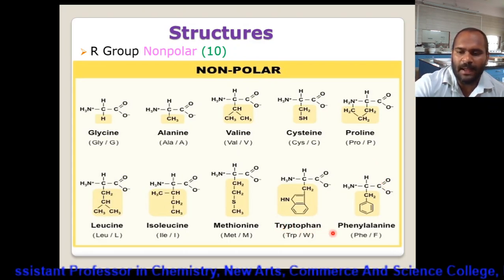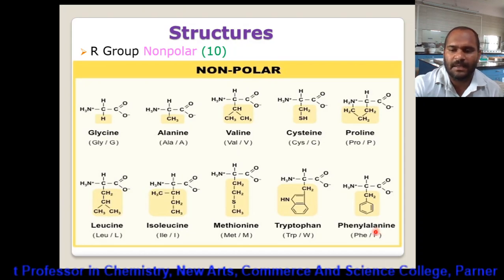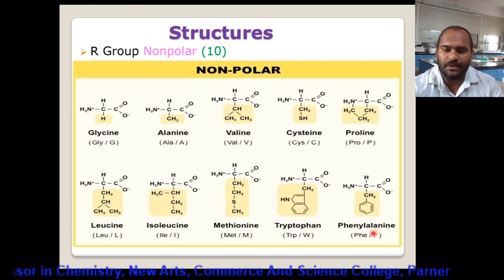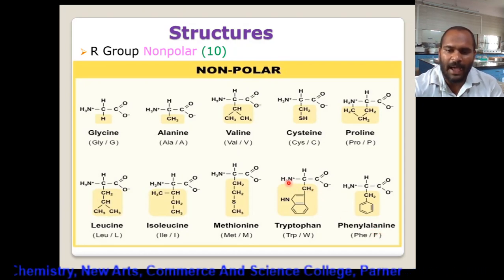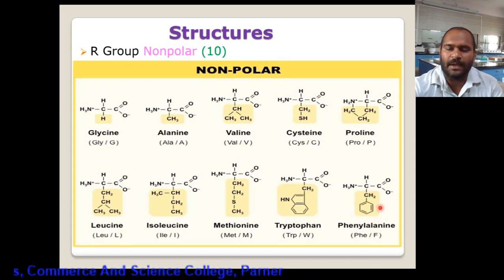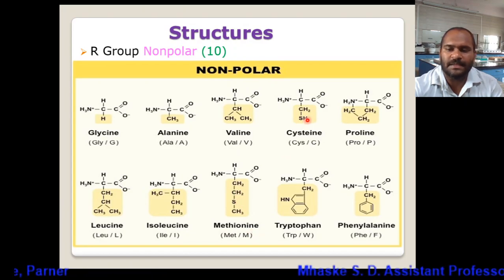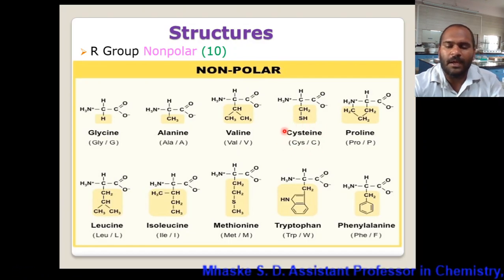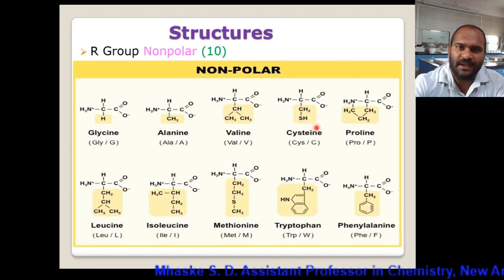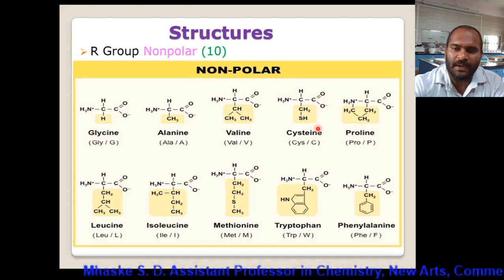Tryptophan and phenylalanine are examples having an aromatic group as a side chain R group. In the case of cysteine and methionine, there is a presence of sulfur. Cysteine is particularly involved in the disulfide type of linkage. So we are considering these 10 amino acids which have a non-polar R group.